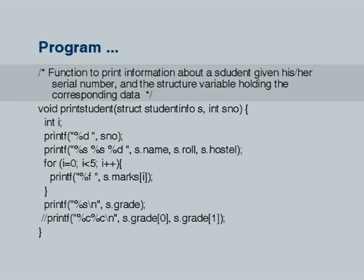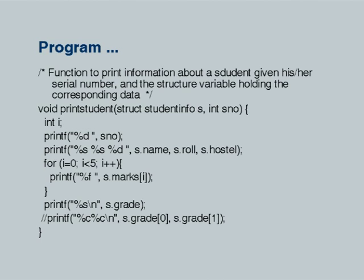The first part of the program is not the main function but a function to print information about a student. A small comment helps: function to print information about a student given his or her serial number, along with the structure variable holding the corresponding data. This function expects a serial number and a structure as parameters. It will not return any value but will simply print the information. Since it is not required to return any value, it is declared as void — a void function has no responsibility of returning a value.